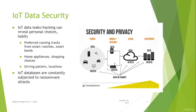The second major challenge is providing security and privacy for IoT data. The flow of data from IoT things to the gateway, to the cloud, and then to the enterprise means that data in transit is what is most often targeted. If data is not properly encrypted and channels are not secure, IoT data leaks and hacking become very common, revealing personal choices and habits such as preferred running tracks, home appliance usage, shopping choices, driving patterns, and locations. IoT databases are also constantly subjected to ransomware attacks.